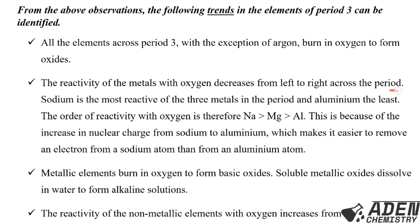The reactivity of metals with oxygen decreases from left to right across the period. Sodium is the most reactive metal and aluminium the least. The order of reactivity with oxygen is: sodium, magnesium, then aluminium. This is because of the increase in nuclear charge from sodium to aluminium, which makes it harder to remove an electron, or because sodium has a higher tendency of losing electrons compared to magnesium and aluminium.